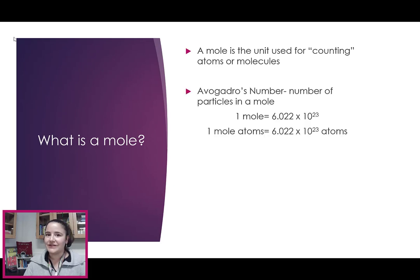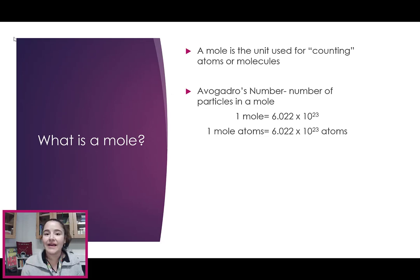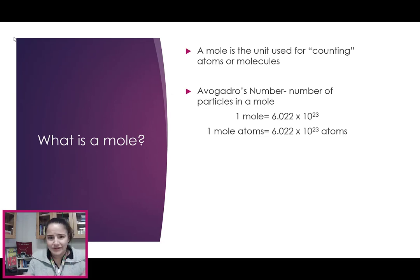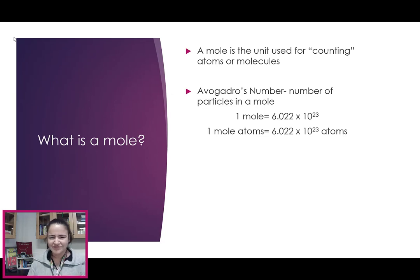Avogadro's number is a really big number. It is 6.02 times 10 to the 23rd, and that's how many particles are in a mole. Those particles could be atoms, they could be ions, they could be molecules, they could be donuts or moles, but it's always that one mole has 6.02 times 10 to the 23rd of whatever — typically atoms or molecules.